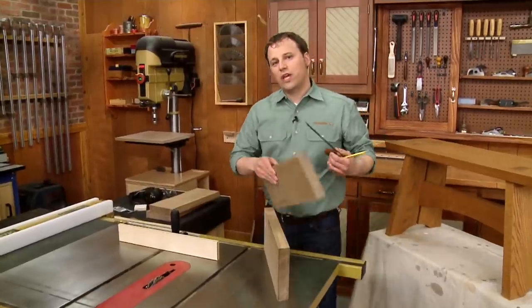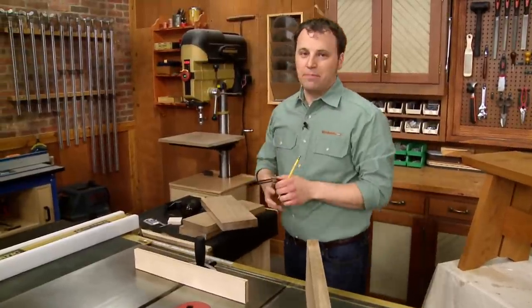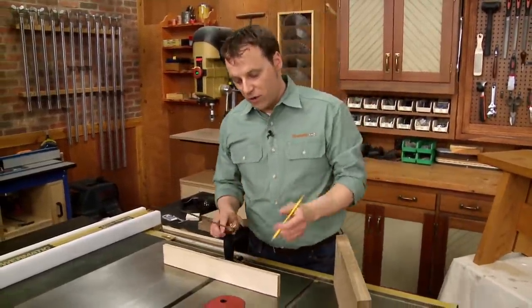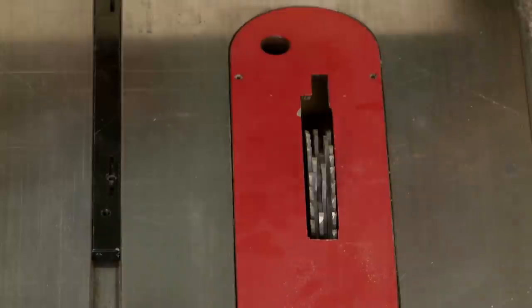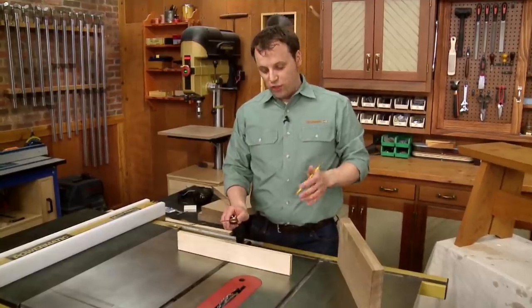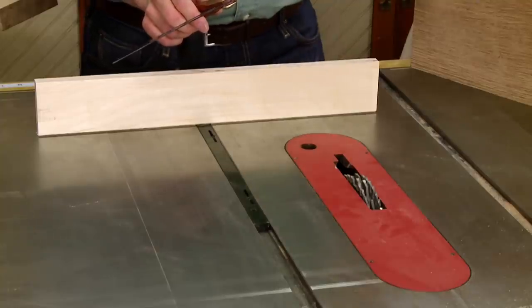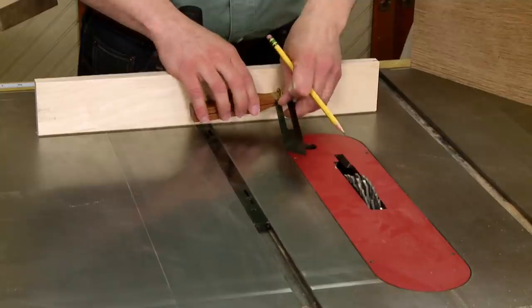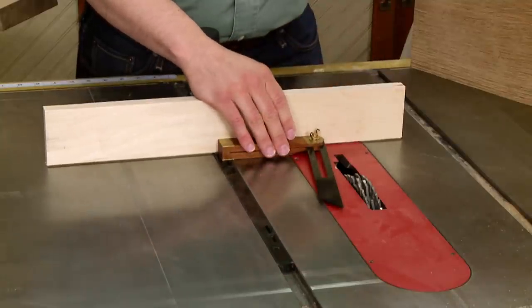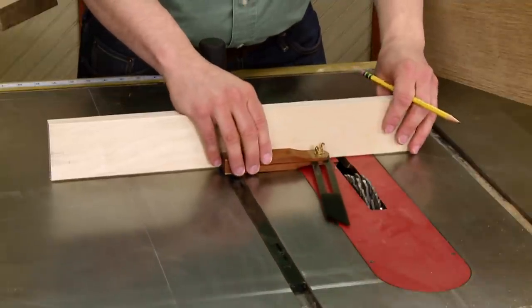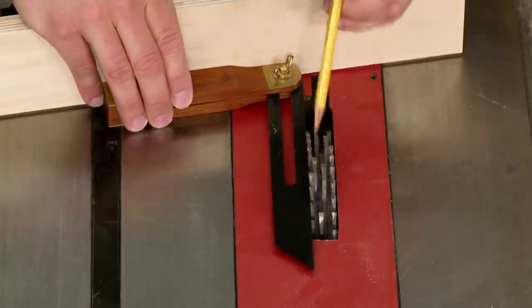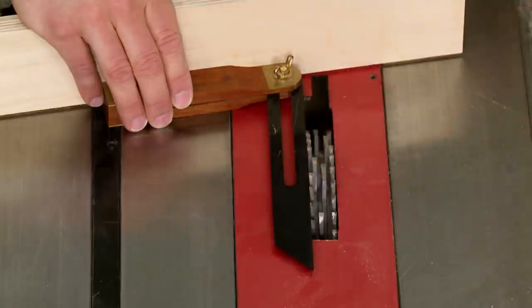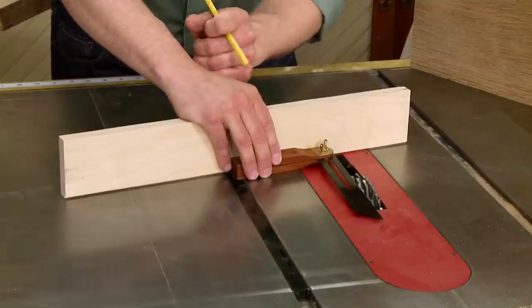After laying out the location of the dados on the workpieces, the next step is to set up the table saw. Now you can see I've already installed a dado blade to make the cuts. Now what I need to do is rotate the miter gauge to match the angle of the dados. And for that, you can actually use the bevel gauge as well. So I'm going to hold the bevel gauge against the fence on the miter gauge. Now I'm going to rotate it until the dado blade and the bevel gauge are aligned. Now I can lock it down.